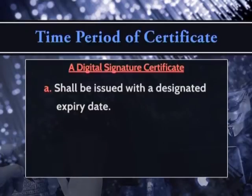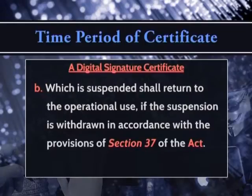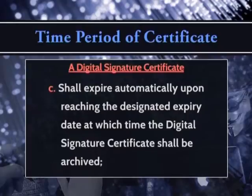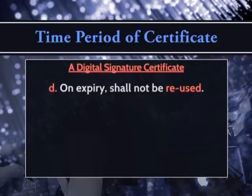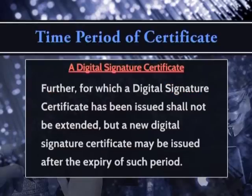A digital signature certificate shall be issued with a designated expiry date. A suspended certificate shall return to operational use if the suspension is withdrawn in accordance with Section 37 of the Act. The certificate shall expire automatically upon reaching the designated expiry date. The period for which a digital signature certificate has been issued shall not be extended, but a new digital signature certificate may be issued after the expiry of such period.